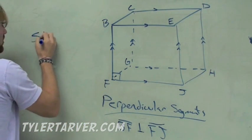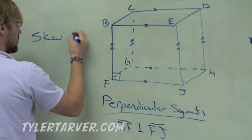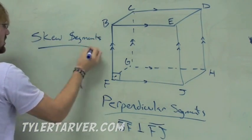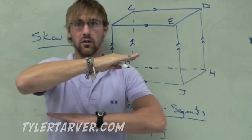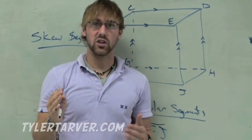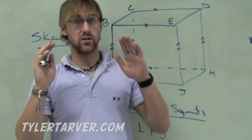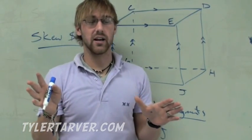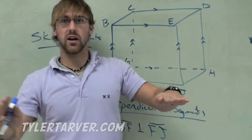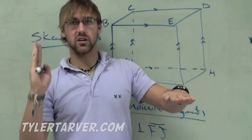Next thing. Skew. Skew lines or segments. We'll do segments here. Skew segments. We've got parallel. We've got perpendicular. One of those two. And now we've got skew, which means that they don't cross, just like parallel, but they're not parallel. You're thinking, well, how does that happen?